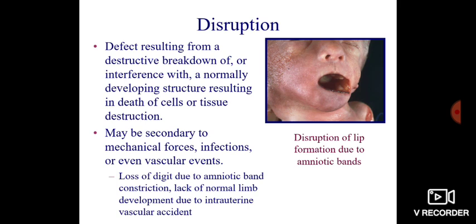Disruption occurs due to destructive breakdown of or interference with a normally developing structure, resulting in death of cells or tissue destruction. It may be secondary to mechanical forces, infection, or vascular events — such as loss of a digit due to amniotic band constriction, or lack of normal limb development due to intrauterine vascular accident.